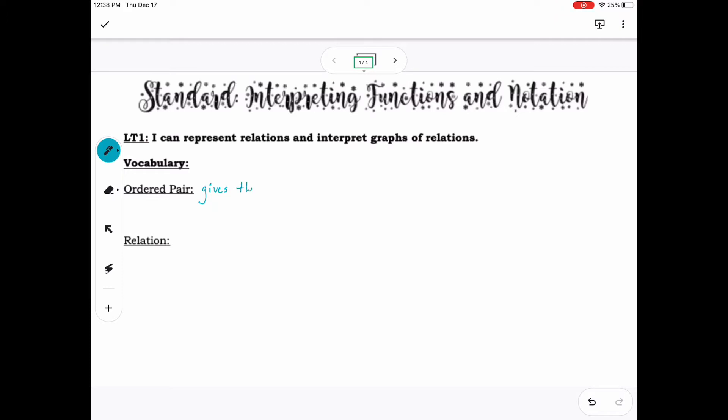We will start with some vocabulary for this learning target. An ordered pair gives the exact location of a point, which is written in the form of x, y.